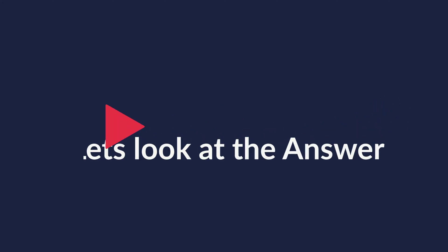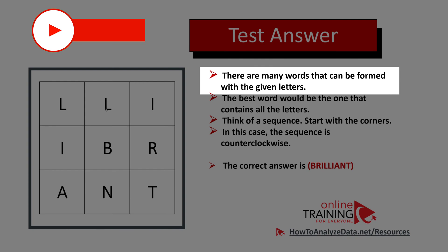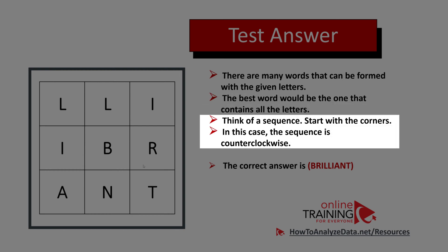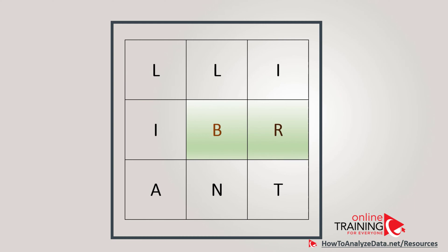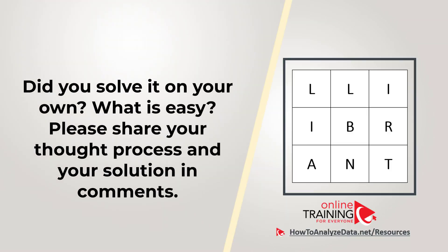Do you recognize the pattern? Let's continue to get to the correct solution together. There are many words that can be formed, but the best word contains all the letters with no duplicates. If we start in the middle and go around counterclockwise, we can form the word 'brilliant' — B, R, I, L, L, I, A, N, T. The correct answer is 'brilliant.' Hopefully you nailed this question.